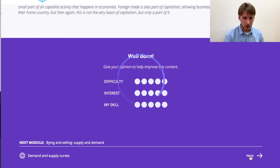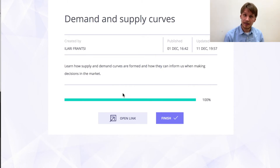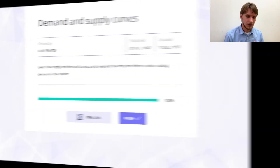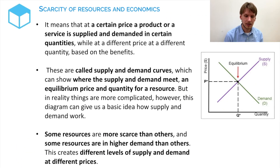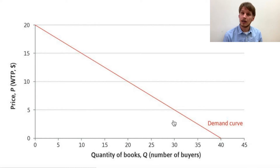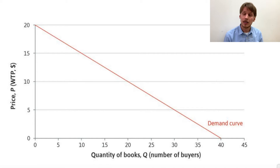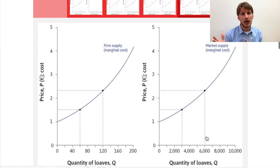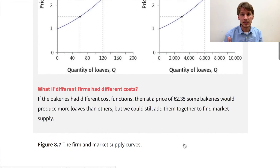Our next module is about supply and demand, which is a very basic concept of economics. It means that when a product is supplied at a certain price, there is only a certain amount of demand at that price. When a product is supplied at a lower price, there is a higher demand for it. There is also a certain willingness to supply a product at a higher price because that price provides the business a higher profit.